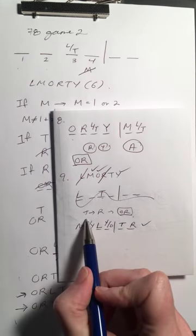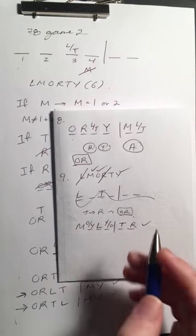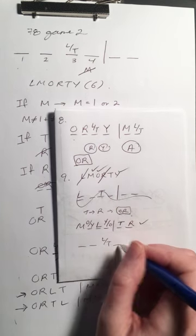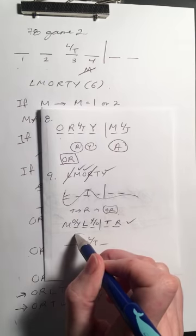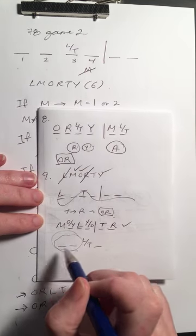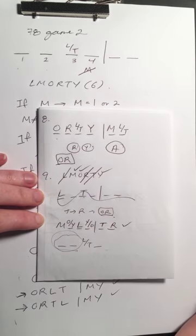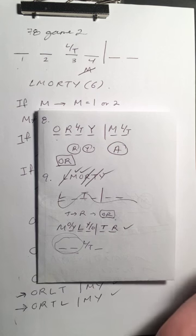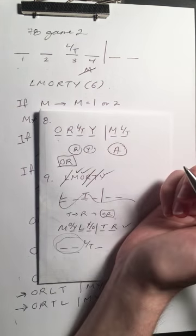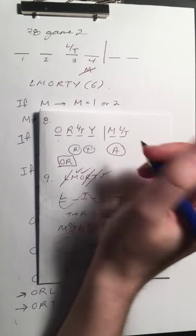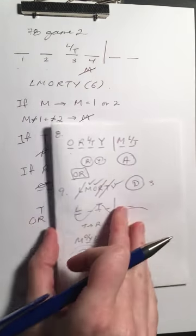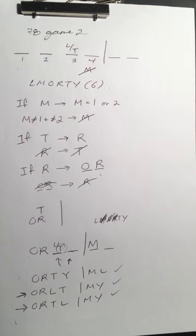If R is in, O has to be before R, so R can never be first. If T is in, R is in and O is before R — the O-R block can only go in spots one and two, so O would end up taking that first spot, meaning T also can't be first. So M, O, and Y are the three students that could be assigned to 1921, and that's answer choice D: three.